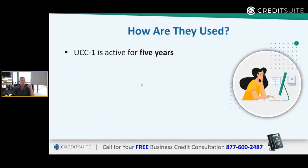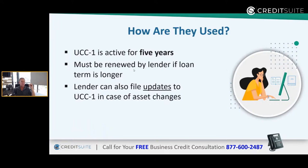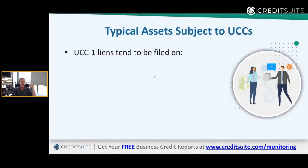A UCC-1 is active for five years — that lien shows up for five years and also appears on the commercial credit report for that period. It must be renewed by the lender if the loan term is longer. For example, an SBA loan might be 30 years, so it's SBA's responsibility to renew the UCC filing. If they don't, it expires in five years. The lender can also file updates to the UCC-1 in case of asset changes.